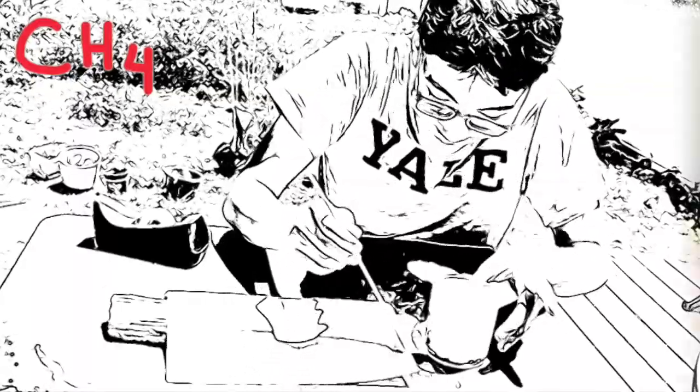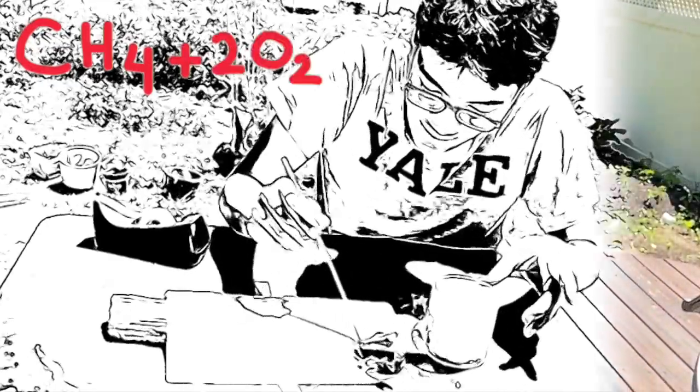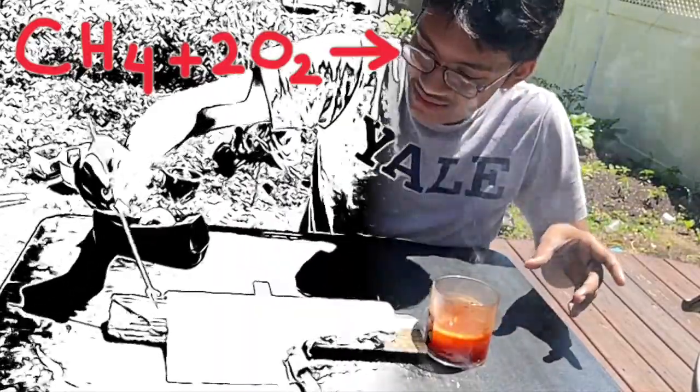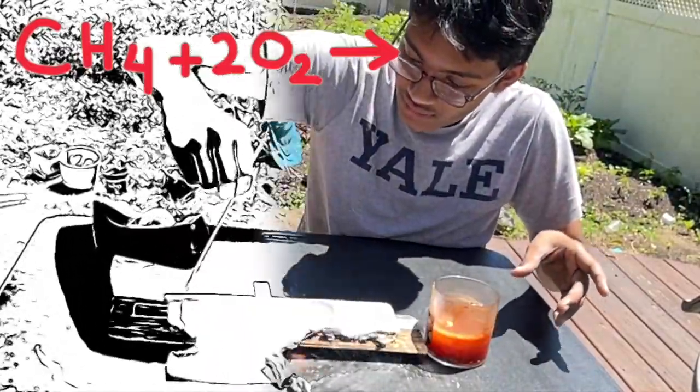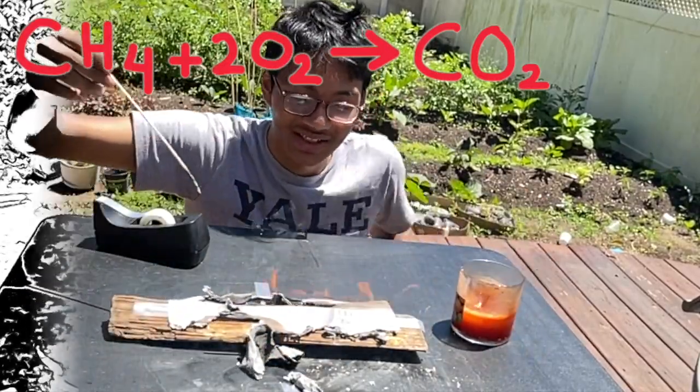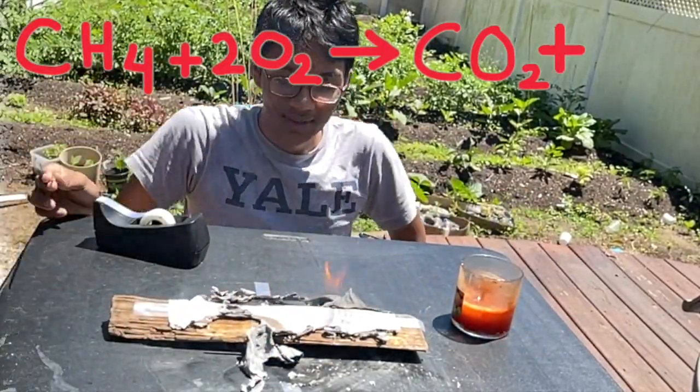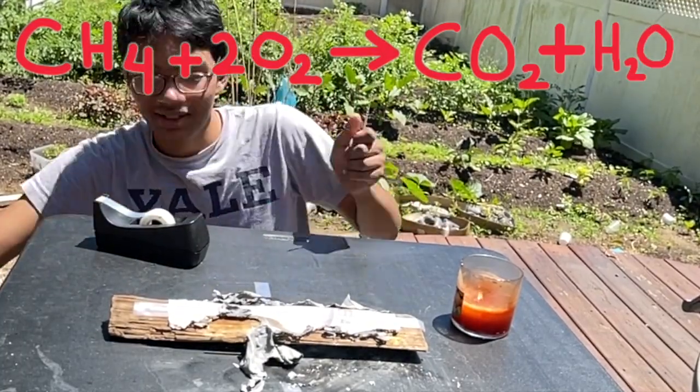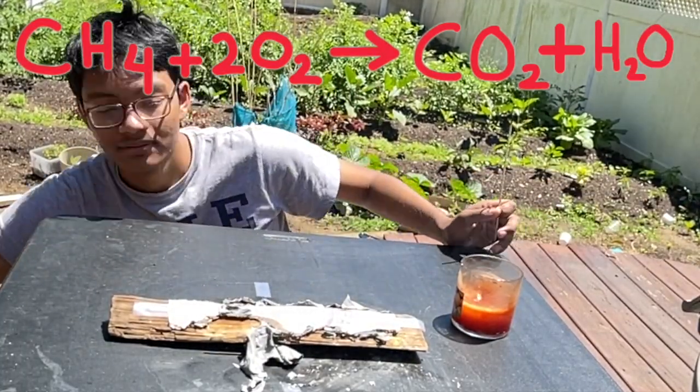Fire is all about combustion. So we start with methane, CH4, and to that we add oxygen, 2O2. Oxygen naturally exists in the form of dioxygen, and that gives us CO2, carbon dioxide. But we have one additional product for this reaction, and that's water. Water forms in the base of our candle.